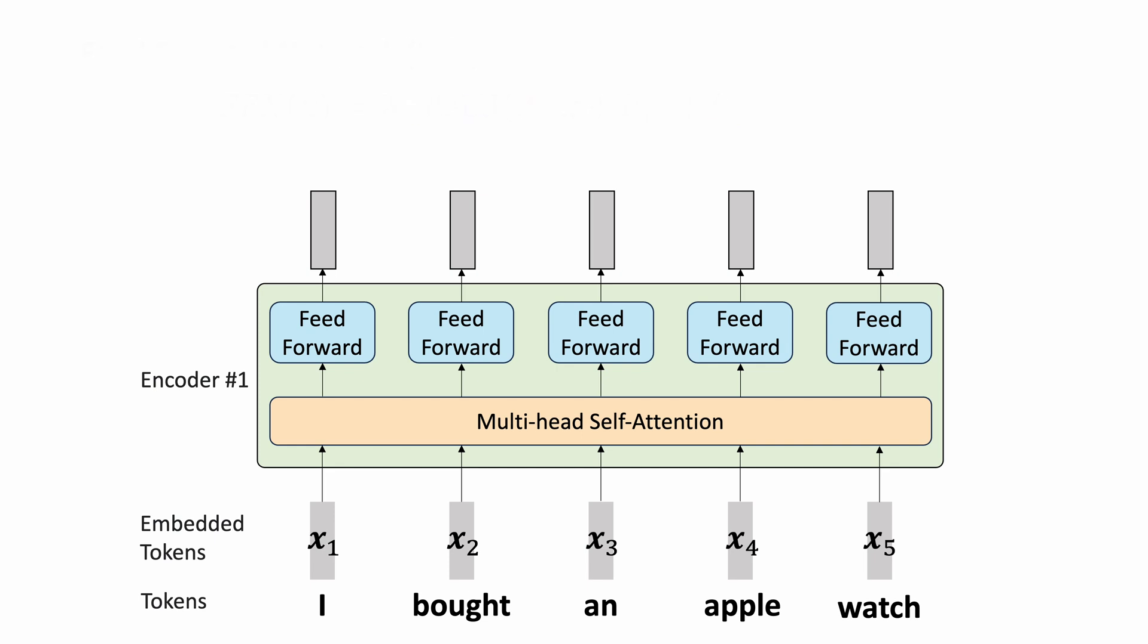But something seems a bit off. The self-attention computation is permutationally invariant. This means that the set of output features for the sentence 'I bought an apple watch' and the sentence 'Watch an apple I bought' is identical up to a permutation. To fix this, we need to provide our model with information about where the words are in the input sequence. This is called Positional Encoding.